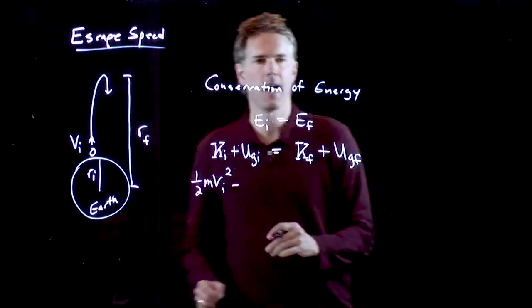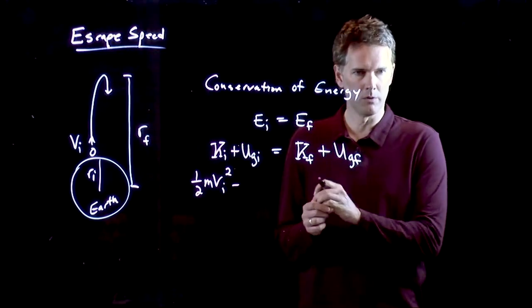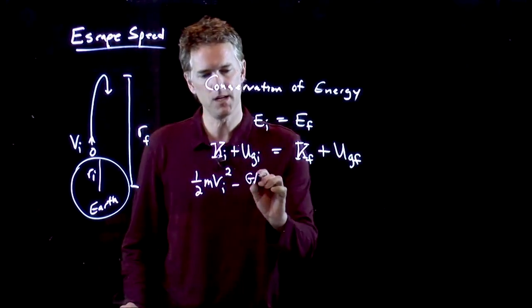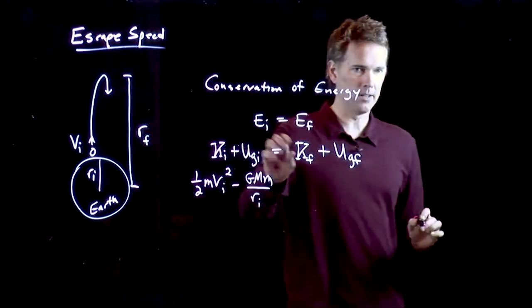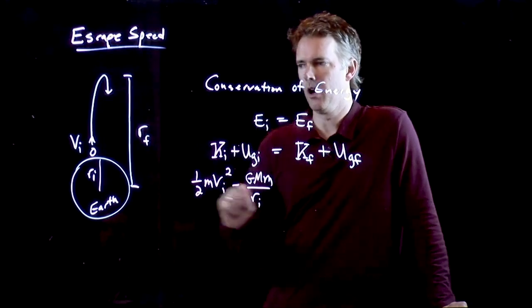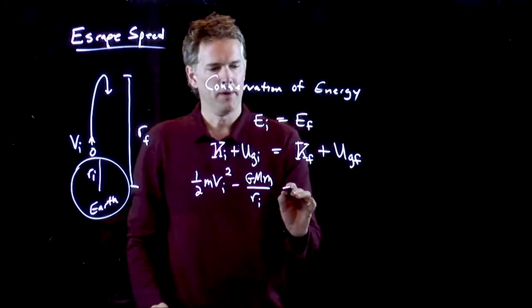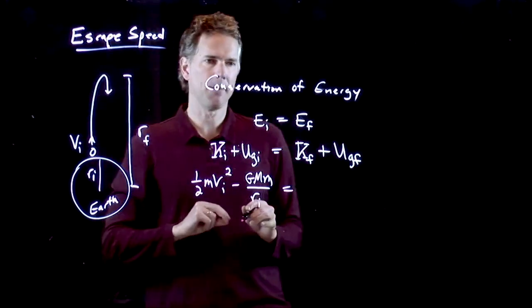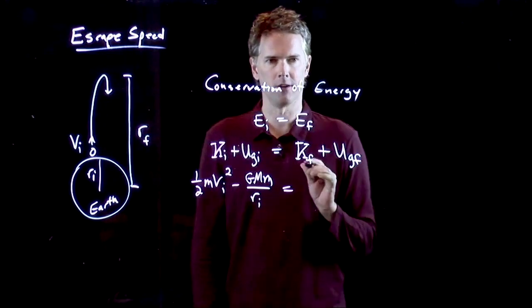Well, last time we derived the potential energy by integrating Newton's universal law of gravitation over a distance. And what we came up with was GMM over R with a negative sign in front of it. This is the gravitational potential energy of that system. What about over here? Matt, what is the final kinetic energy when this thing gets up to the top of its motion and it is momentarily at rest?